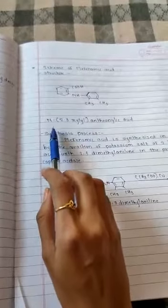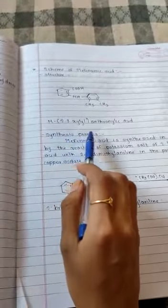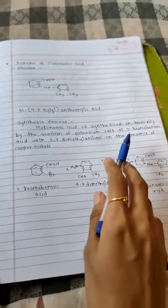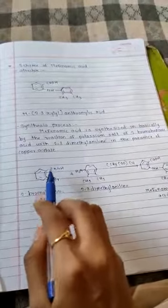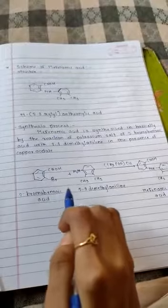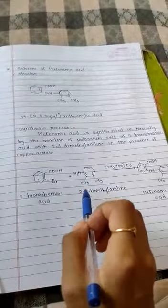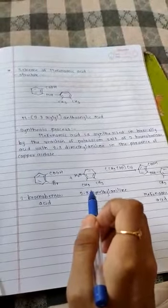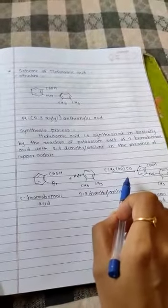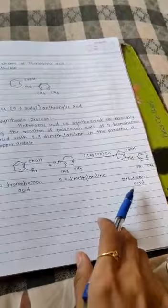The synthesis process of mefenamic acid is synthesized basically by the reaction of potassium salt of 2-bromo benzoic acid with 2,3-dimethyl aniline in the presence of copper acetate. It gives mefenamic acid.